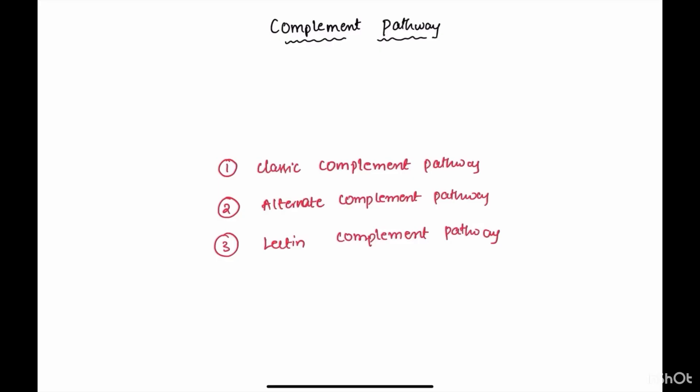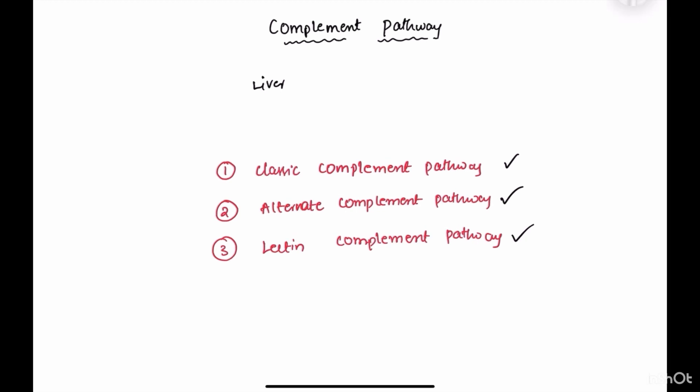Hi guys, my name is SHV. In today's video we are going to discuss about the complement pathway. Complement are a system of plasma proteins that are synthesized in the liver, which play a major role in innate immunity and inflammation. It is called complement pathway because it complements the immune system to kill bacteria. Complement pathways are activated in three ways: classic complement pathway, alternate complement pathway, and lectin-mediated complement pathway.